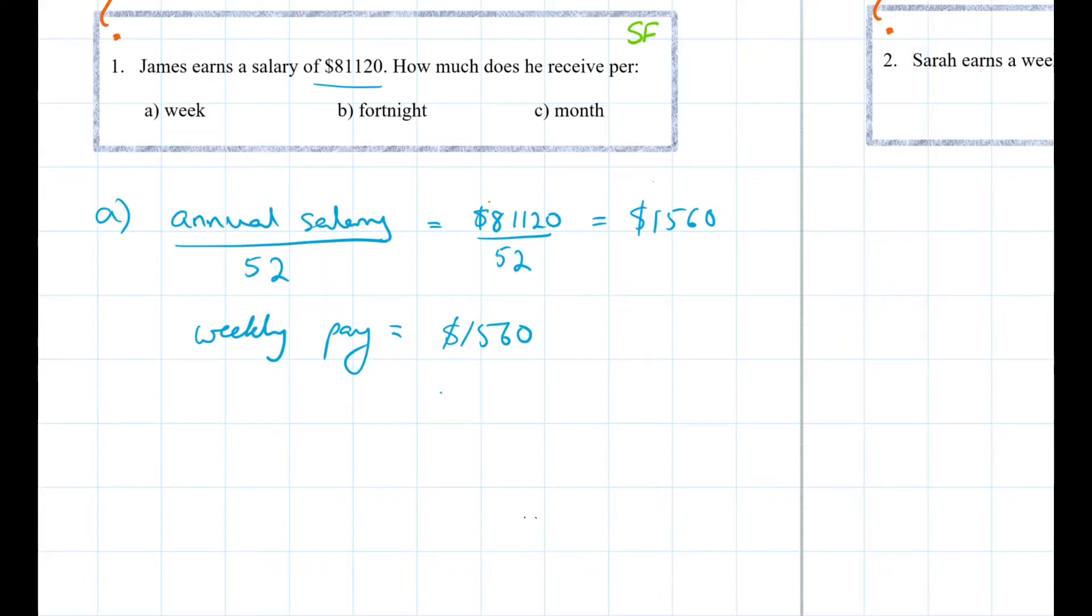Okay let's look at part B, his fortnightly pay. Alright so a fortnight consists of two weeks and there are 26 fortnights in a year which is also half of, so 26 is half of 52 as two weeks make up one fortnight.